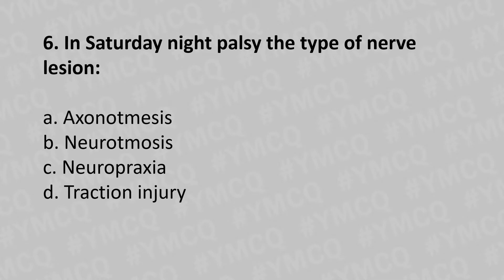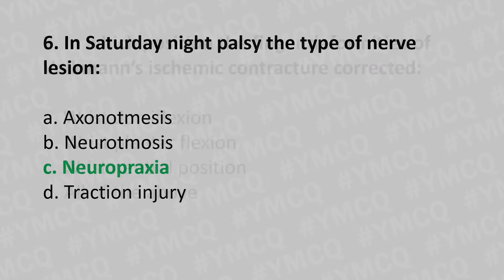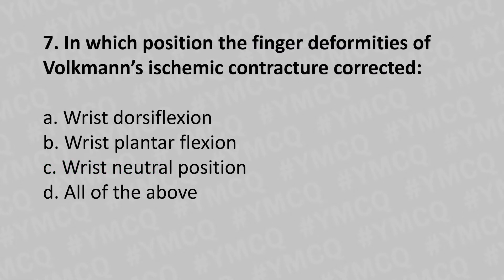Moving to our sixth question: in Saturday night palsy, the type of nerve lesion is — option A axonotmesis, option B neurotmesis, option C neuropraxia, option D traction injury. And the answer is option C neuropraxia.